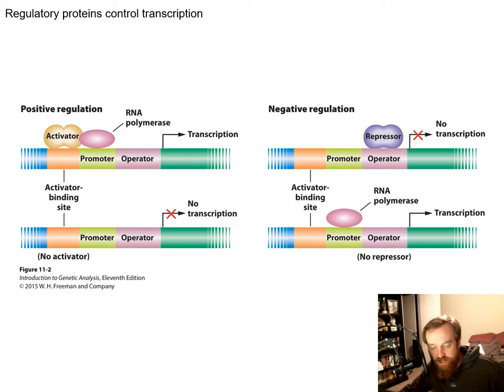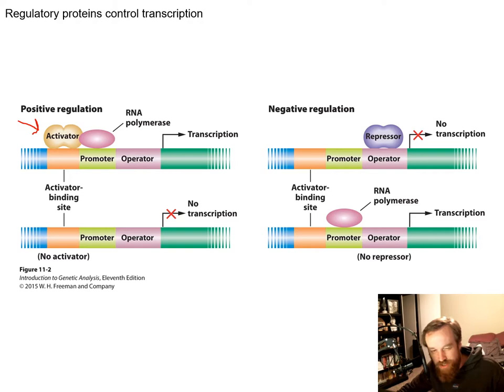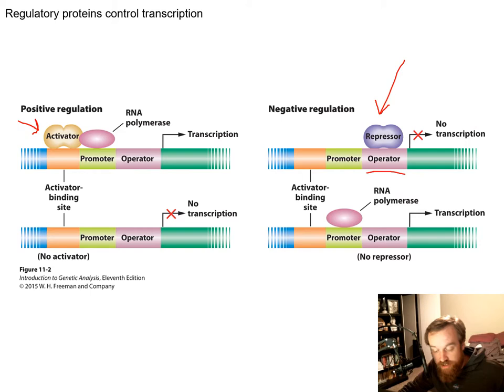There are two ways regulatory proteins can control transcription. First is activation: activator proteins bind to a site upstream of the gene's promoter and help to promote transcription, including by recruiting the actual transcription machinery. The second form is repression: repressor proteins bind to a specific site called the operator, which is located in between the promoter and the gene.